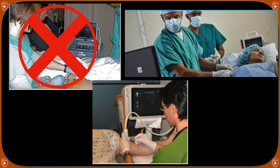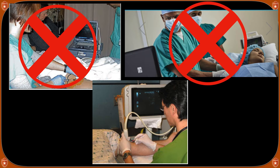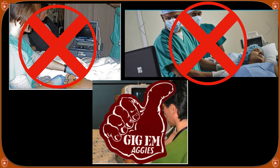What about the picture in the upper right hand corner? Another big no-no. You're going to be doing a procedure in front of you, so ideally you want the ultrasound machine also in front of you so everything is aligned. You don't want to be looking backwards — it makes doing the procedure a lot more difficult. The bottom picture gets a big thumbs up. If you're doing a procedure in front of you, you want the ultrasound machine in front of you as well.